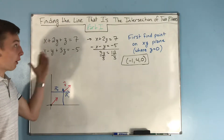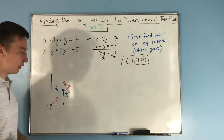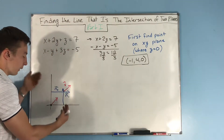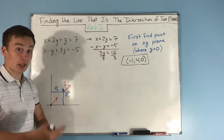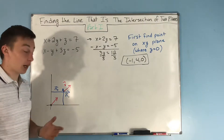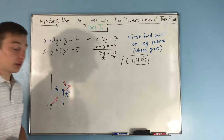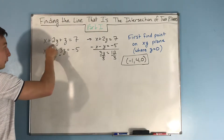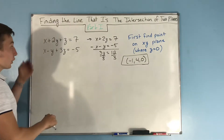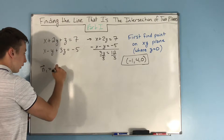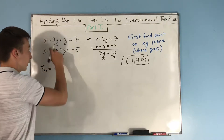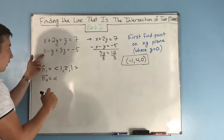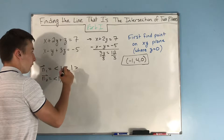This is probably the hardest part to understand about this whole problem, but if you stare at it enough you end up understanding it. You're using the normal vectors, and when you take their cross product, that resulting vector is orthogonal to both — and that's the same direction as your line. For x plus 2y plus z equals 7, n1 is (1, 2, 1). For the second plane, n2 is (1, -1, 3).